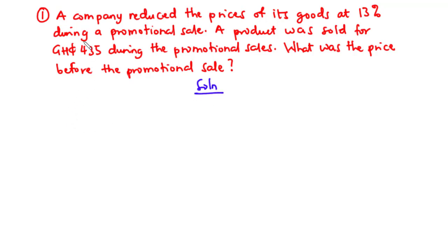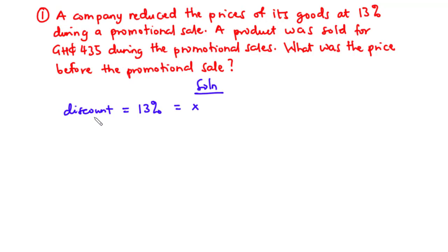From the question, we are told the company reduced prices by 13 percent during a promotional sale, so the discount is 13 percent — that is our x value. After the reduction, the product was sold for 435 Ghana cedis, so that is the new price.